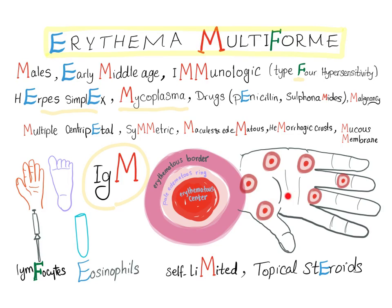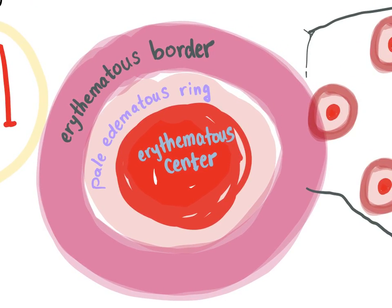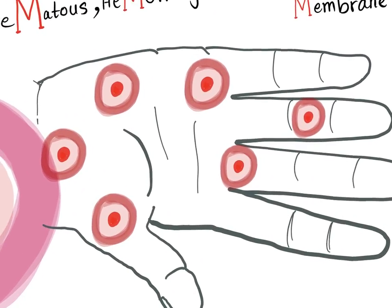Here you can see multiple lesions on the palm. The rash is target-like, consisting of three distinct regions: the center is erythematous and sometimes crusty or vesicular; it is surrounded by a pale edematous ring; and at the outside is an erythematous border.